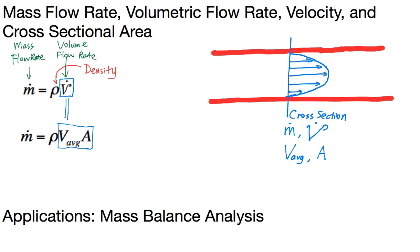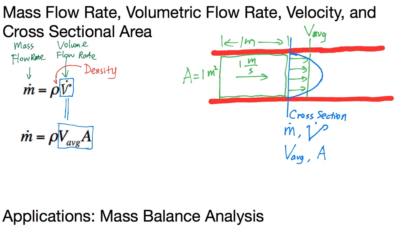Now we know there is a velocity distribution at the cross-section. However, from a mass conservation point of view, we can find an average velocity. We can use a specific example to illustrate the relation between the volumetric flow rate, the average velocity, and the cross-sectional area.